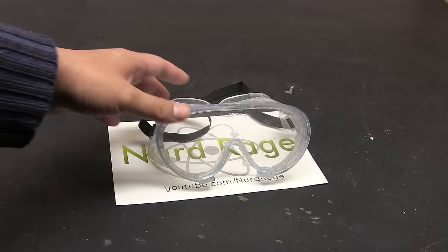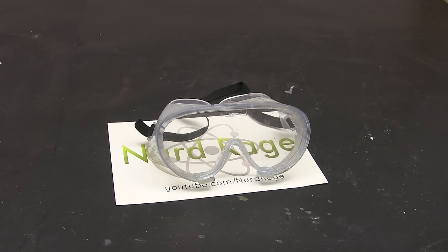Lab goggles are essential, a blind experimenter is not a very good one. Regular glasses are not enough as chemicals can splash all over your face and still get behind the glasses. Wrap around goggles like these ones are what you want. Have a couple on hand in case one gets too dirty or foggy. I know they're annoying, uncomfortable and leave pressure marks on your face.